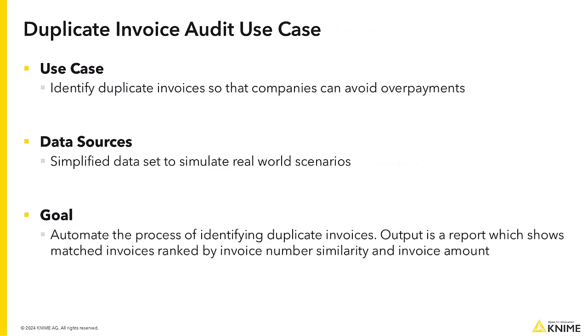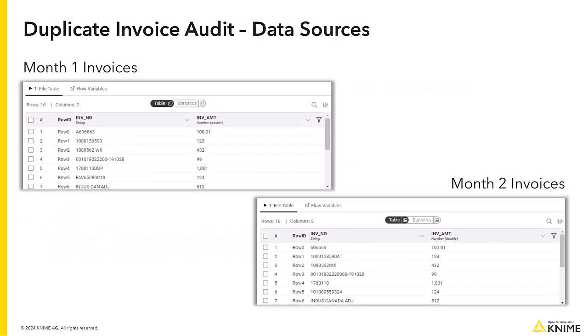Today, we will showcase how to use KNIME for efficient and accurate identification of duplicate invoices within accounts payable. For this example, we use a simplified dataset to simulate real-world scenarios. Our goal is to automate the process of identifying duplicate invoices. The output is a report which shows matched invoices ranked by invoice number similarity and invoice amount. We will utilize a simplified dataset which just includes invoice number and invoice amount.